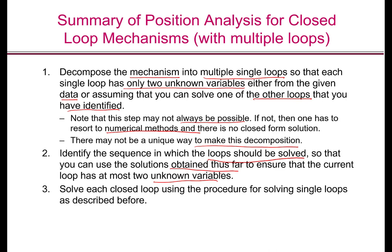The second step is to identify the sequence in which the loops should be solved, so that either solutions obtained thus far or already-known angles ensure the current loop has at most two unknown variables. Then solve each closed loop using the procedure for single loops. When you cannot use this method, one useful fact is how to convert a trigonometric equation into a polynomial equation — specifically, given p·sinθ + q·cosθ = r, substitute sinθ = 2t/(1+t²) and cosθ = (1−t²)/(1+t²).